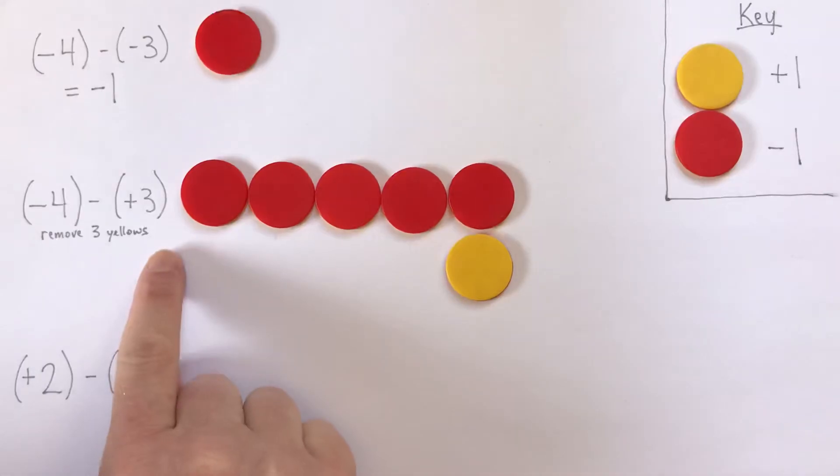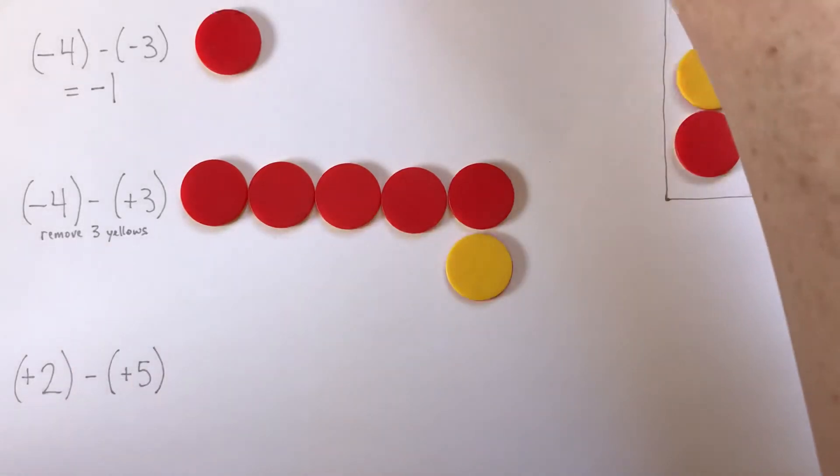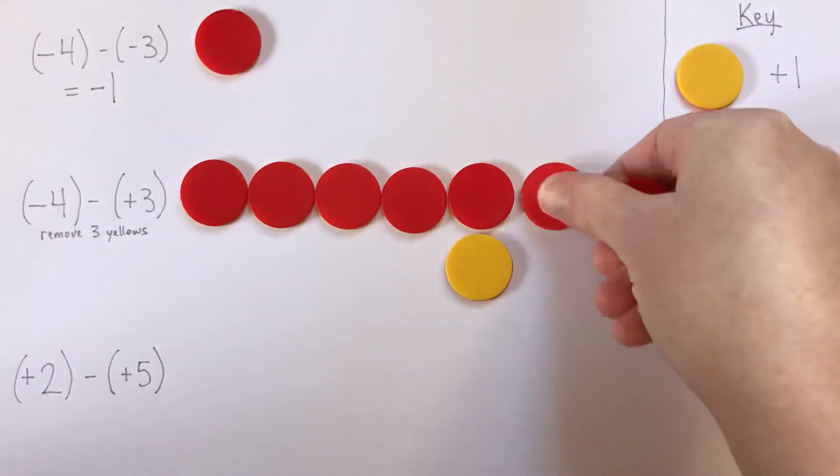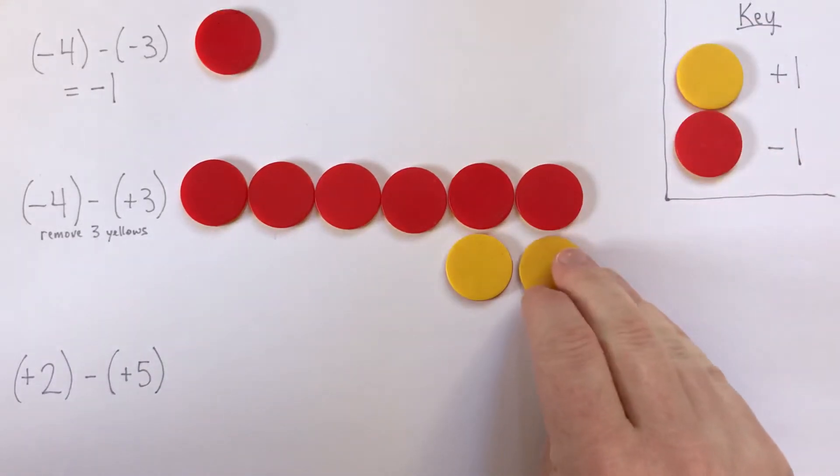So actually, this is getting us on the right track here. It would be possible now to remove 1 yellow, but we'd like to remove 3. So what we'll do is we'll just put on another zero pair. As you do this, I suggest telling yourself, even out loud or under your breath, this is still negative 4.